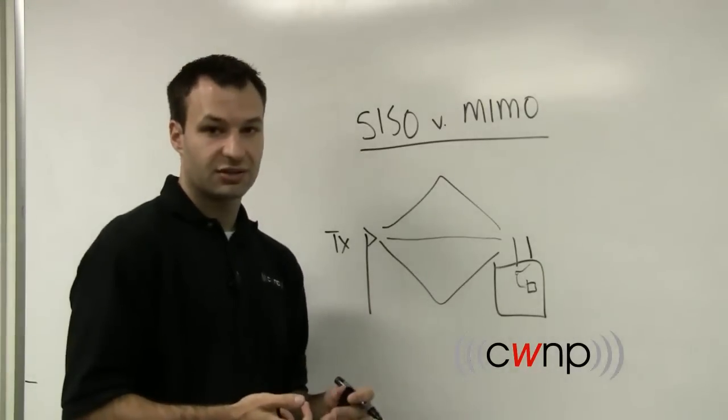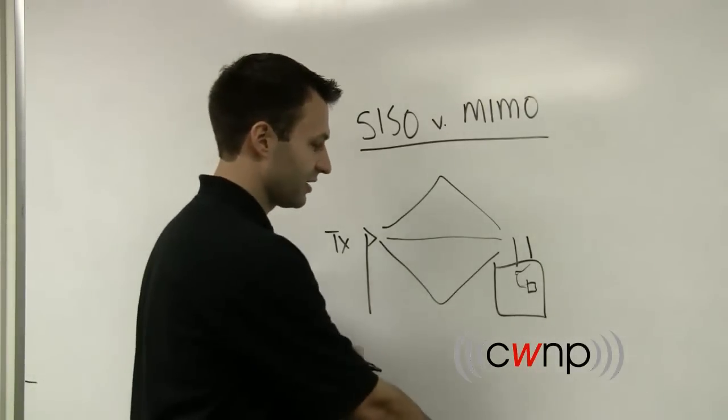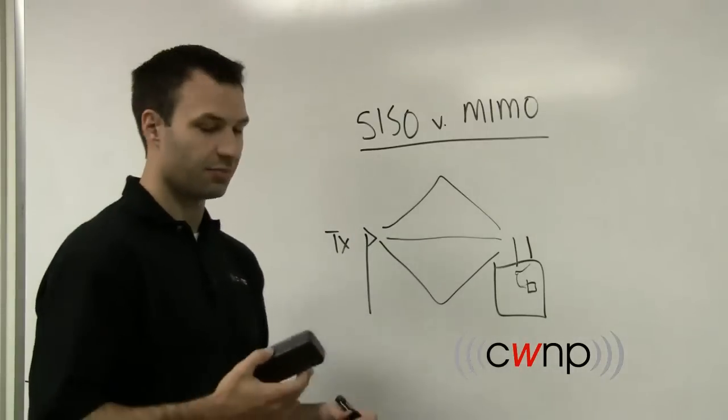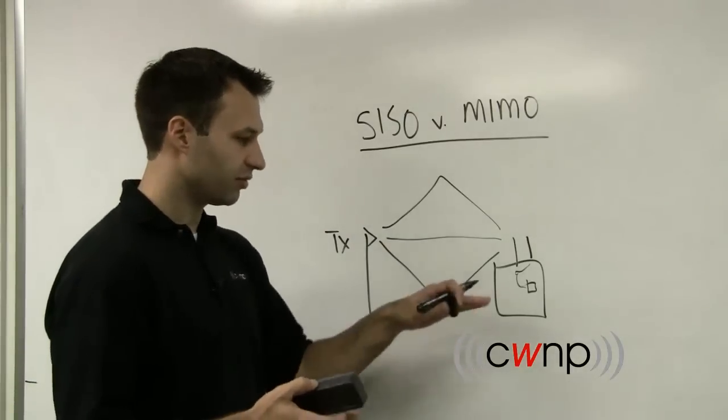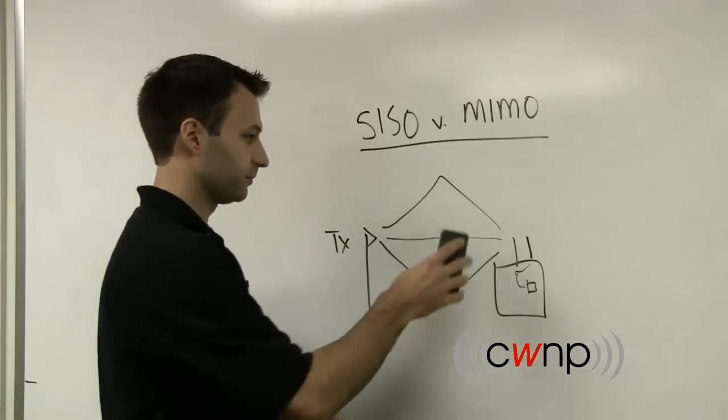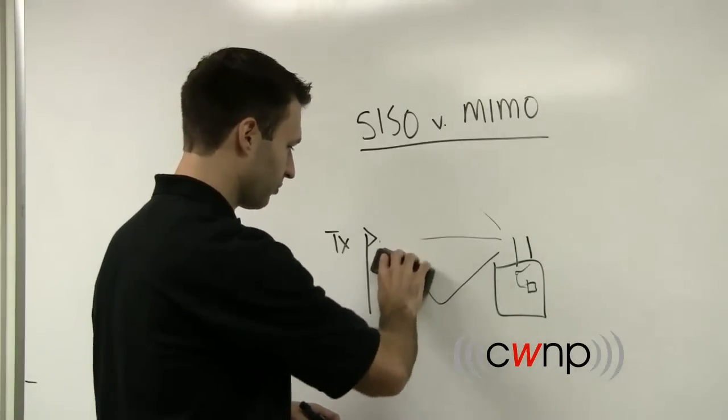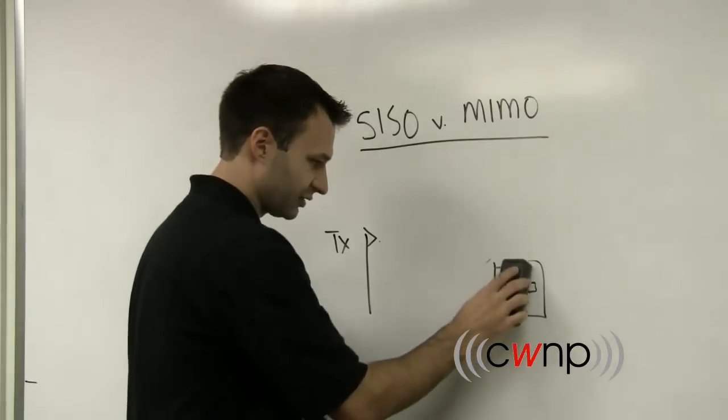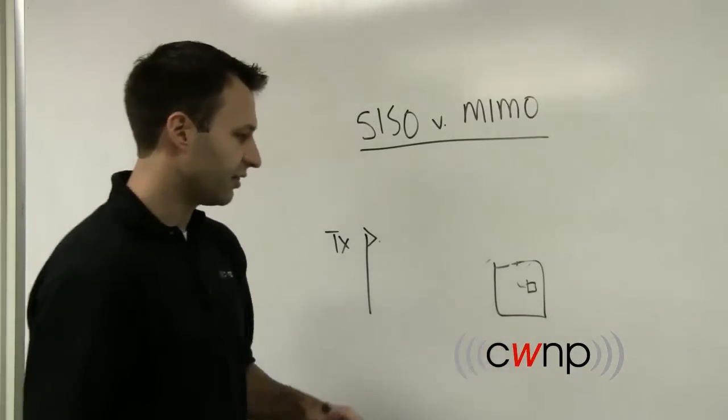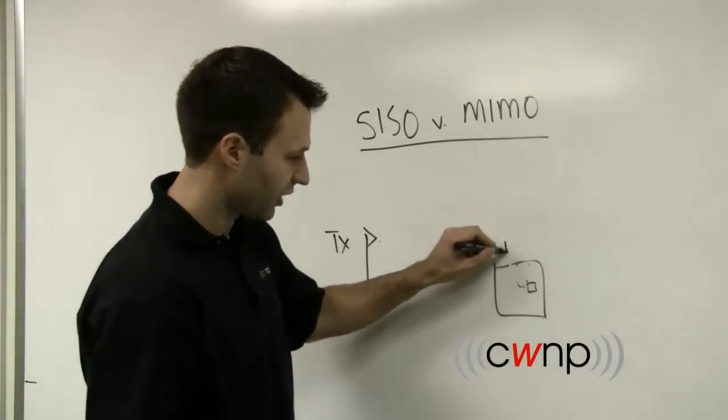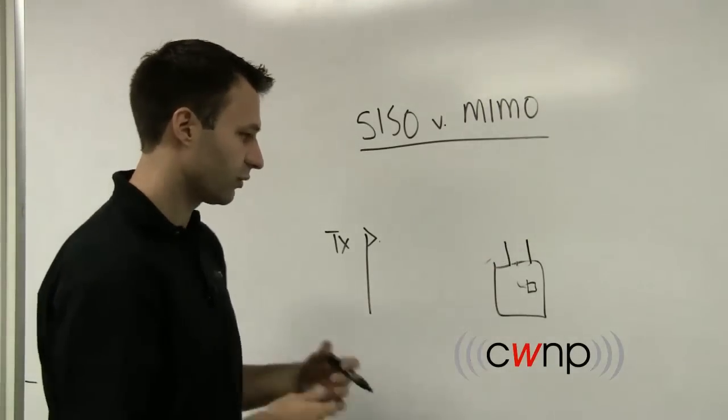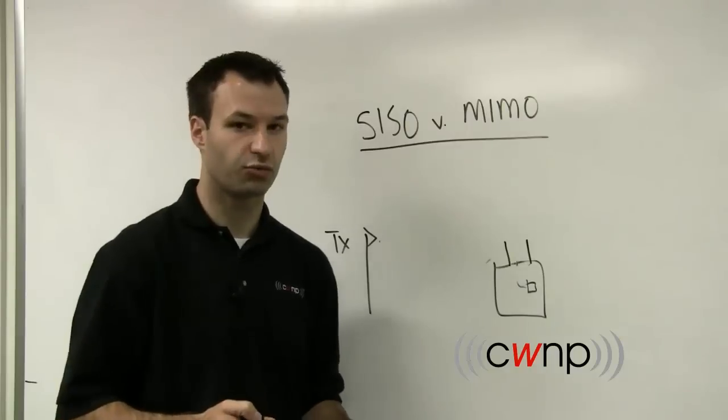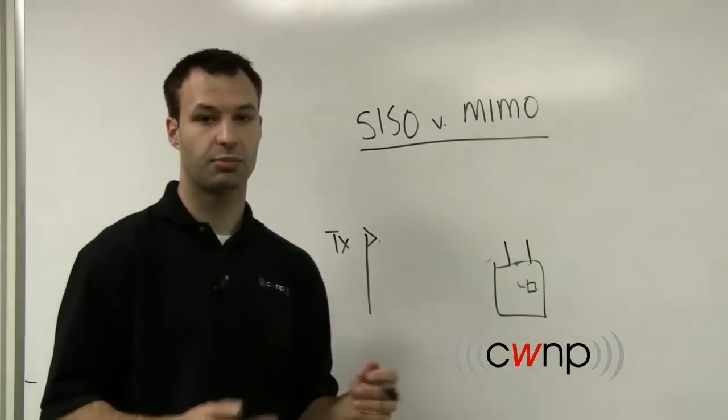So there's some pretty obvious limitations there with single input, single output, in that you're really only getting the benefit of one antenna with maybe some diversity built in. With multiple input, multiple output, there's some new intelligence and some new logic within the access point that allows you to use multiple radios. So we'll continue here with the illustration of only two radios, but this is a multiple input, multiple output system.